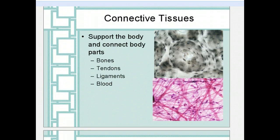While epithelial tissues cover things, connective tissues support the body and connect body parts. Bones are an example of connective tissue because they provide the support structure for your body. Tendons and ligaments connect bones to bones and bones to muscles. And blood, even though it's a liquid, is an example of connective tissue because it allows nutrients to move through your body, connecting your cardiovascular and digestive systems to the rest of the body.